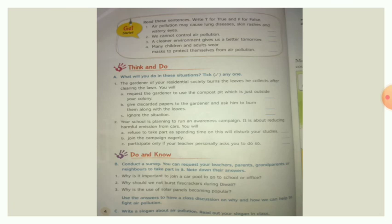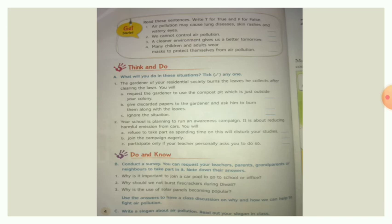Now take your book and open page number 4. Read these sentences and write T for true and F for false. First: 'Air pollution may cause lung diseases, skin rashes, and watery eyes.' The answer is True. Second: 'We cannot control air pollution.' The answer is False — we can control air pollution. Third: 'A cleaner environment gives us a better tomorrow.' The answer is True. Fourth: 'Many children and adults wear masks to protect themselves from air pollution.' The answer is True.